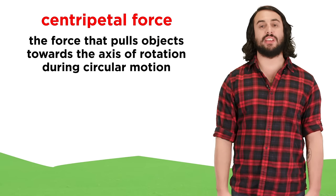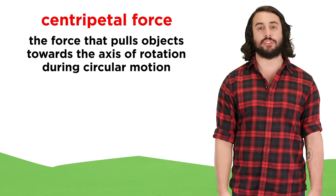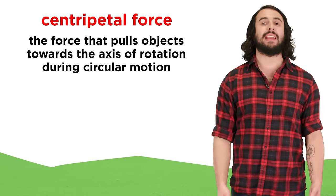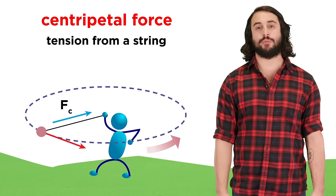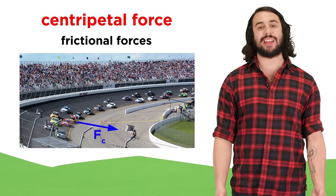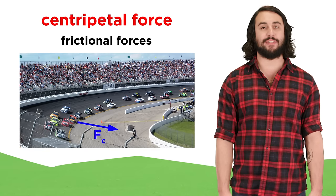So centripetal force is the force pulling an object inwards towards the axis of rotation during circular motion, and it can take the form of tension from a string, gravity exerted by massive objects, or static friction from the road when a car navigates a curve.